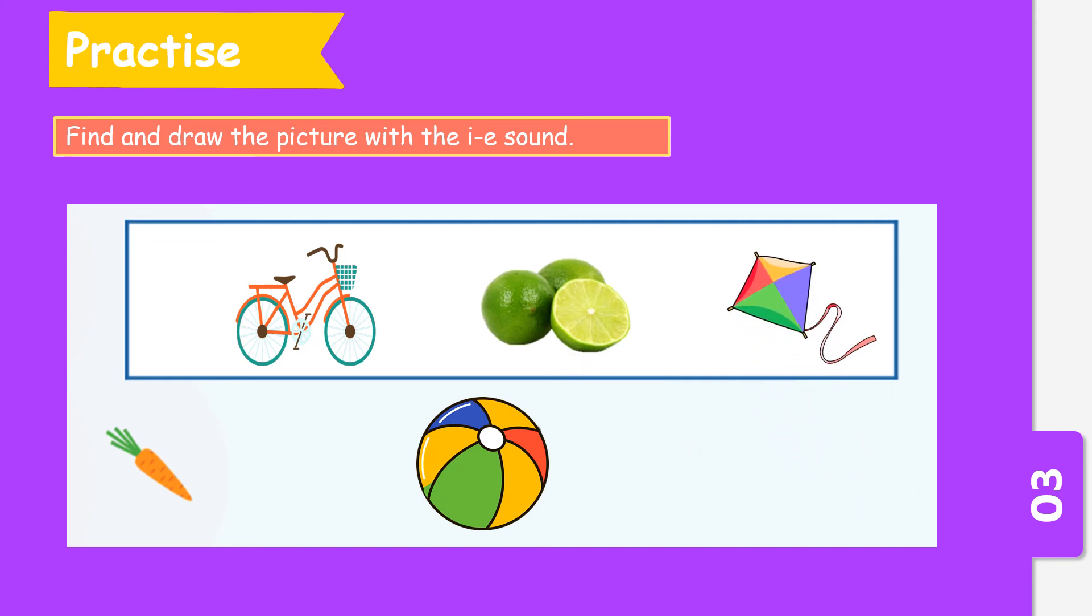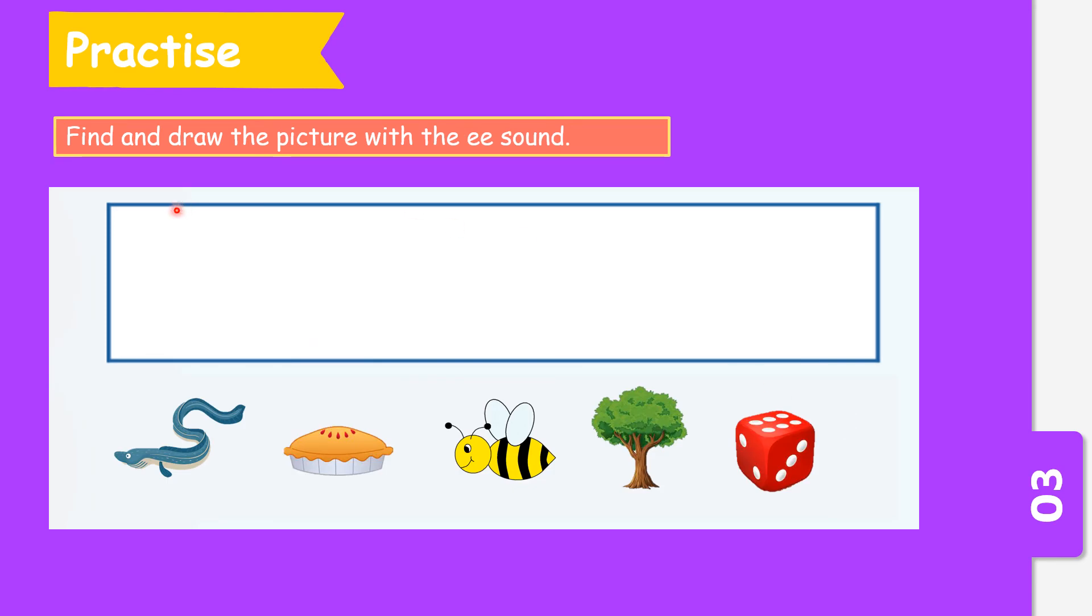Now let's try the next one. Find and draw the picture with the EE sound. We have eel, bee, bean, tree and dice. Which one do you think you need to draw in the box?